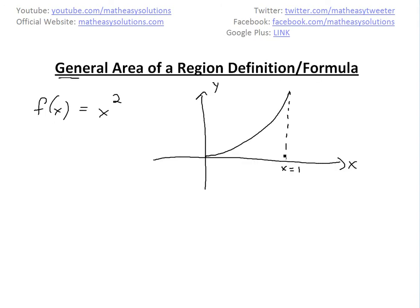In my earlier video, I looked at this equation y equals x squared, f(x) equals x squared. I wanted to get the area under this region and I broke it up into a bunch of rectangles and then took a limit. I found the area of all these rectangles under this, and the area ended up being 1 over 3 when you take the limit.